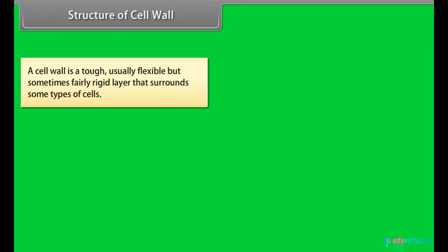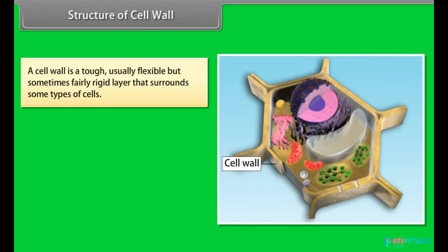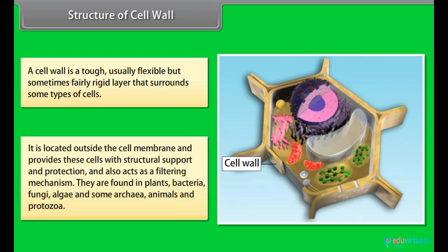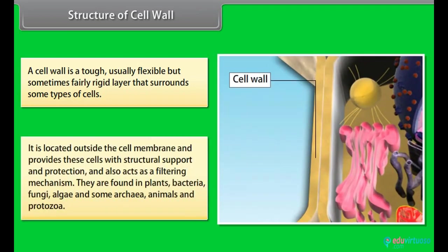Structure of cell wall: A cell wall is a tough, usually flexible but sometimes fairly rigid layer that surrounds some types of cells. It is located outside the cell membrane and provides these cells with structural support and protection, and also acts as a filtering mechanism. They are found in plants, bacteria, fungi, algae and some archaea.